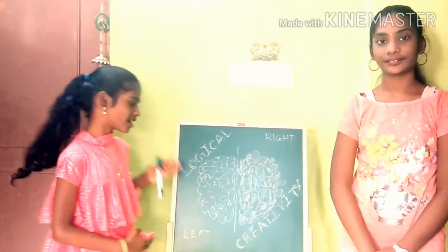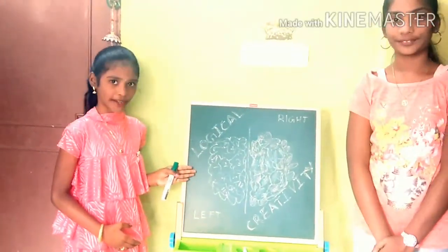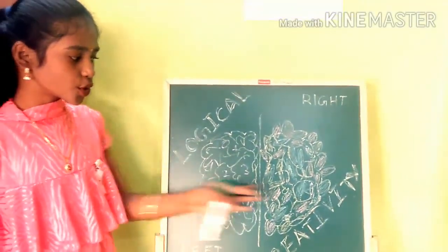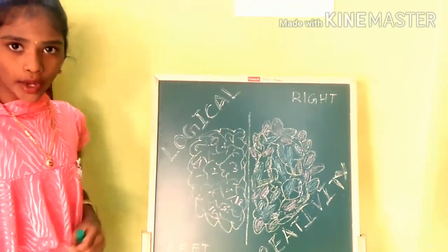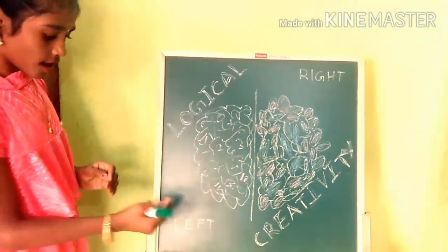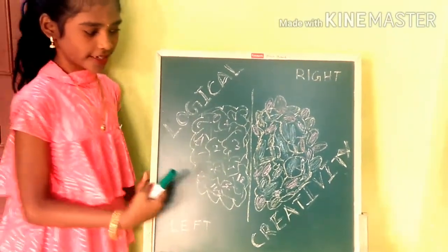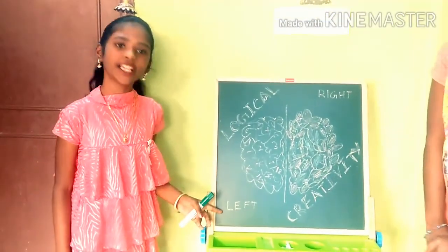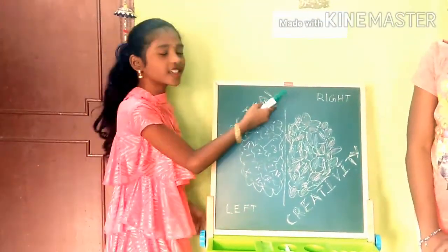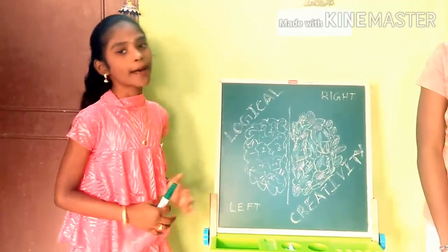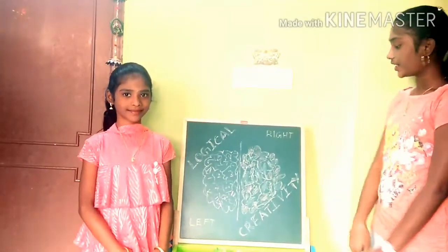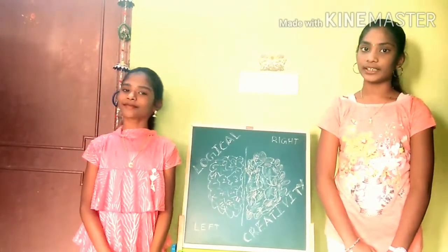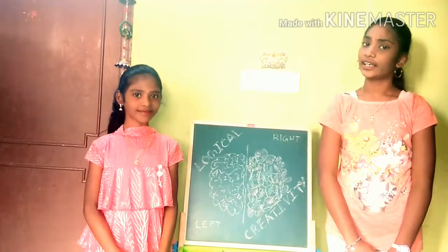This is a diagram of a brain. Our brain is divided into two parts: one is left brain, and one is right brain. Generally, the left brain is used for logical thinking. For example, calculations. Generally, our right brain is used for creativity. Examples are drawing, coloring, etc.